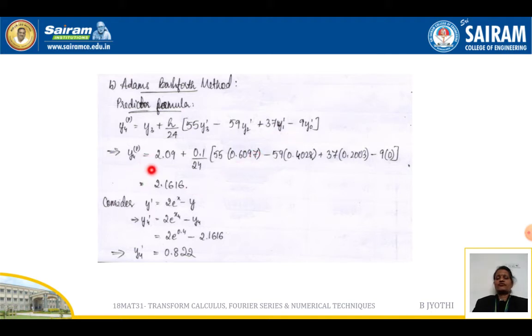So y₄(p) = 2.09 + 0.1/24[55(0.6097) - 59(0.4028) + 37(0.2003) - 9(0)], which gives us 2.1616.